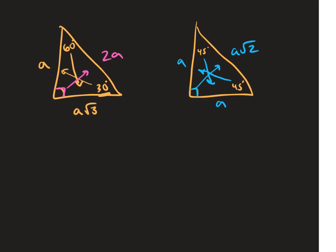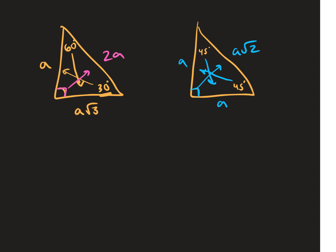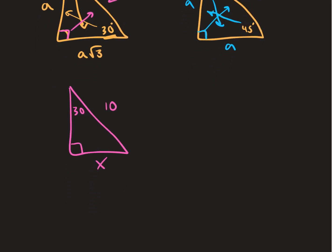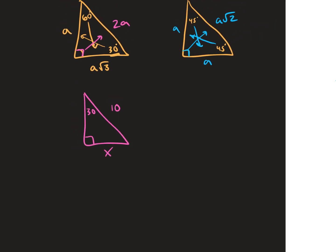For a 30-60-90 example, let's say the hypotenuse is 10 and the angle is 30°, and we need to find X. Opposite the 30° is A, and opposite the 90° is 2A. So 2A equals 10 — divide by 2 — and A equals 5. So X equals 5.